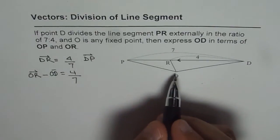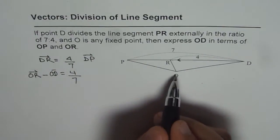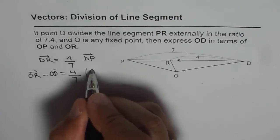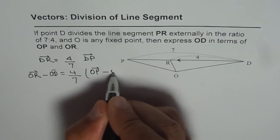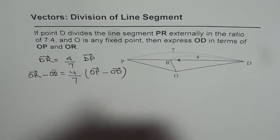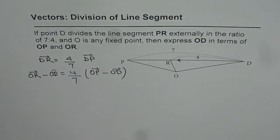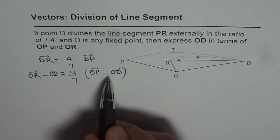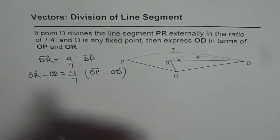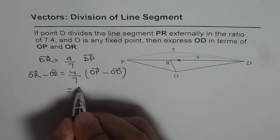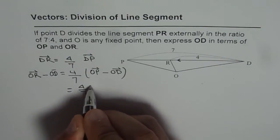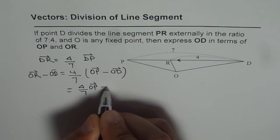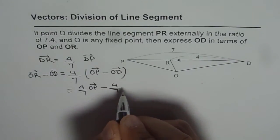DP, DP, DP, D to P can be written as OP minus OD. Now, we need to find what is OD. So, let us bring the terms relating to OD together. First, expand the right side, we get 4 over 7 OP minus 4 over 7 OD.